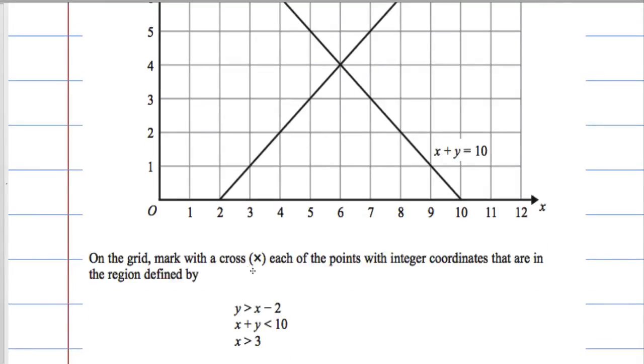On the grid, mark with a cross each of the points with integer coordinates, so they've got to be positive whole numbers, in other words they're going to be on the grid,